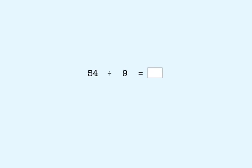54 divided by 9. We ask ourselves, 9 times what number is 54? The answer is one more than the digit in the tens place of the product. So the answer is 6. 54 divided by 9 is also 6.